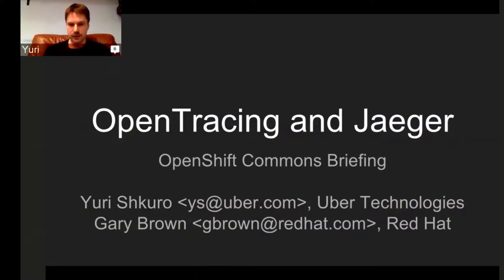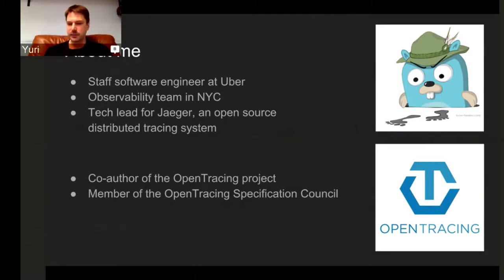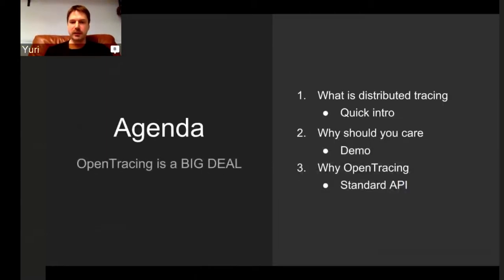Thank you, Dan. I'm an engineer at Uber. We have an observability team in New York City which does things like metrics, logging, and tracing, and other observability-related applications. I have been a tech lead for the Jaeger project at Uber for about two years, and we open-sourced that project back in April this year. I was also involved in the open tracing project from the beginning and am a member of the Specification Council for open tracing.